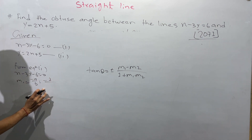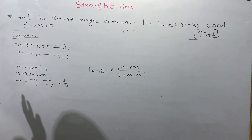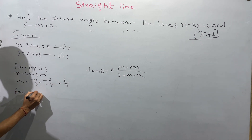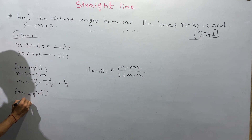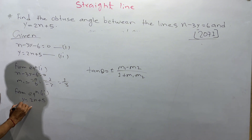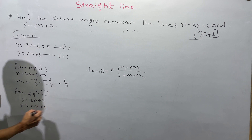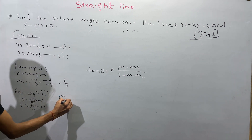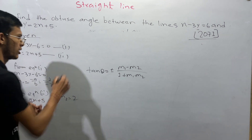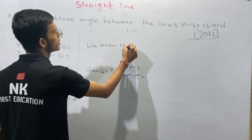From equation 1, x minus 3y minus 6 equals 0, the slope m1 is minus a divided by b, which gives minus 1 divided by minus 3, so m1 equals 1 by 3. From equation 2, y equals 2x plus 5, comparing with y equals mx plus c, the slope m2 equals 2.